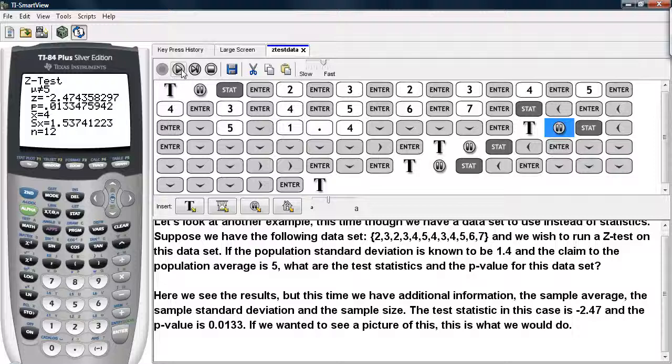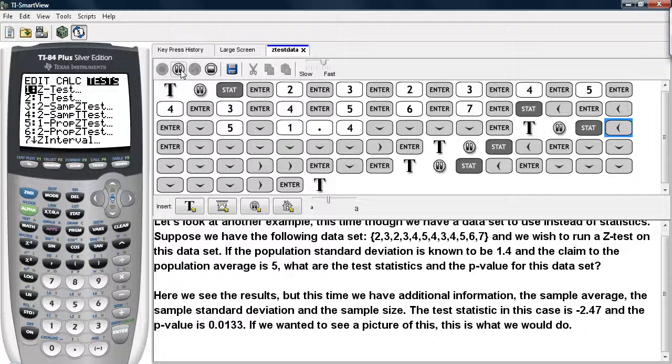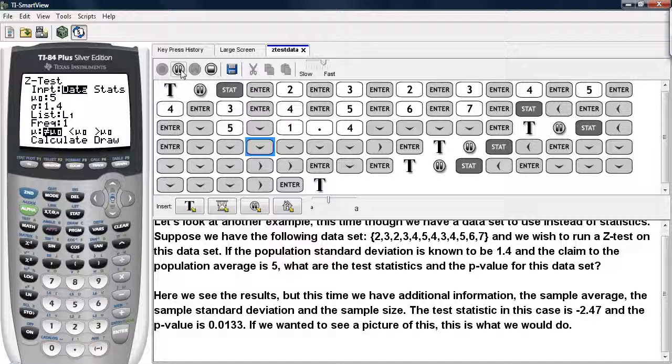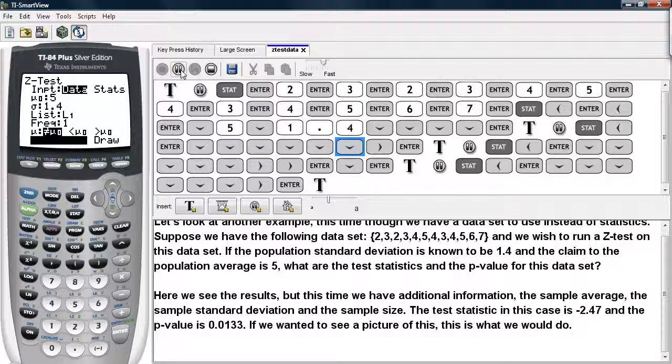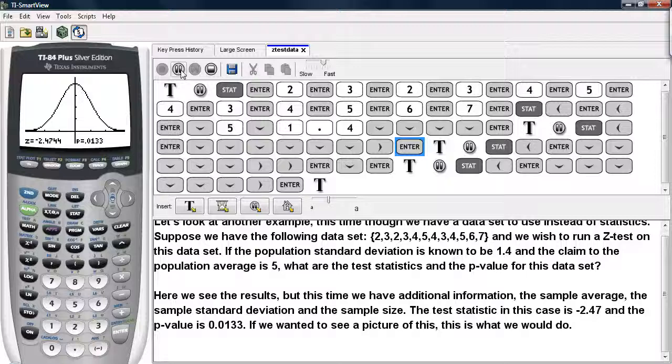Now, what if you wanted to see a picture of this scenario? Well, here's how it can be done. You hit Stat, highlight Test, select Z Test, and then scroll down until you get to Draw.